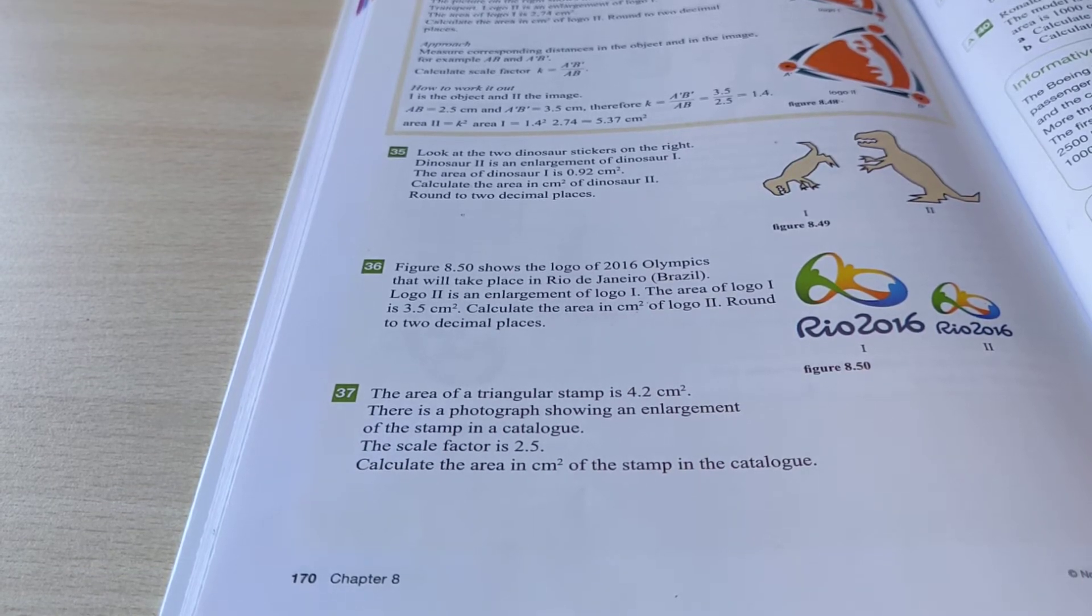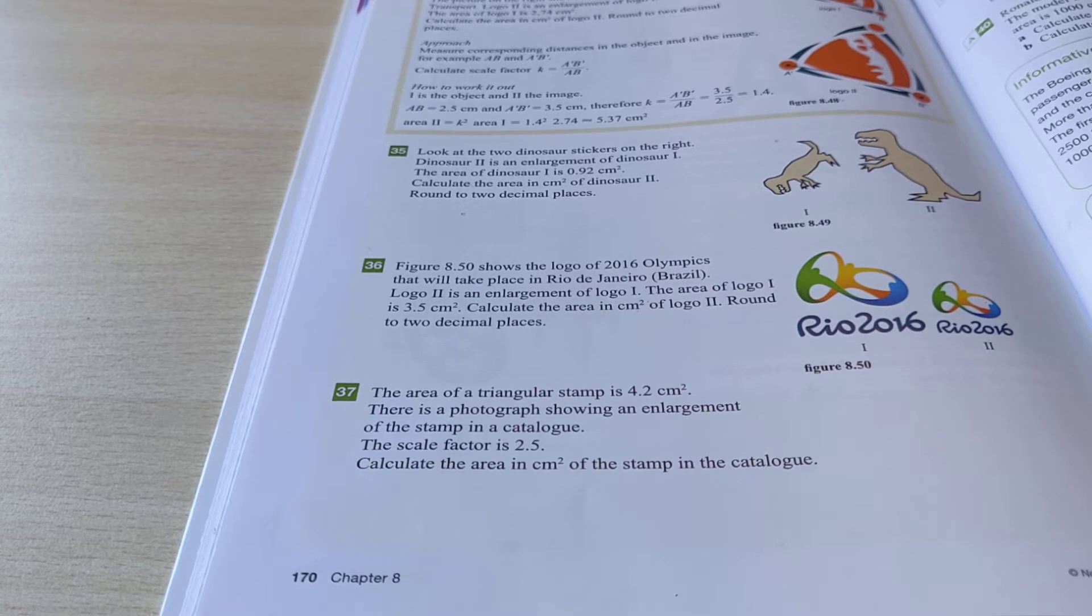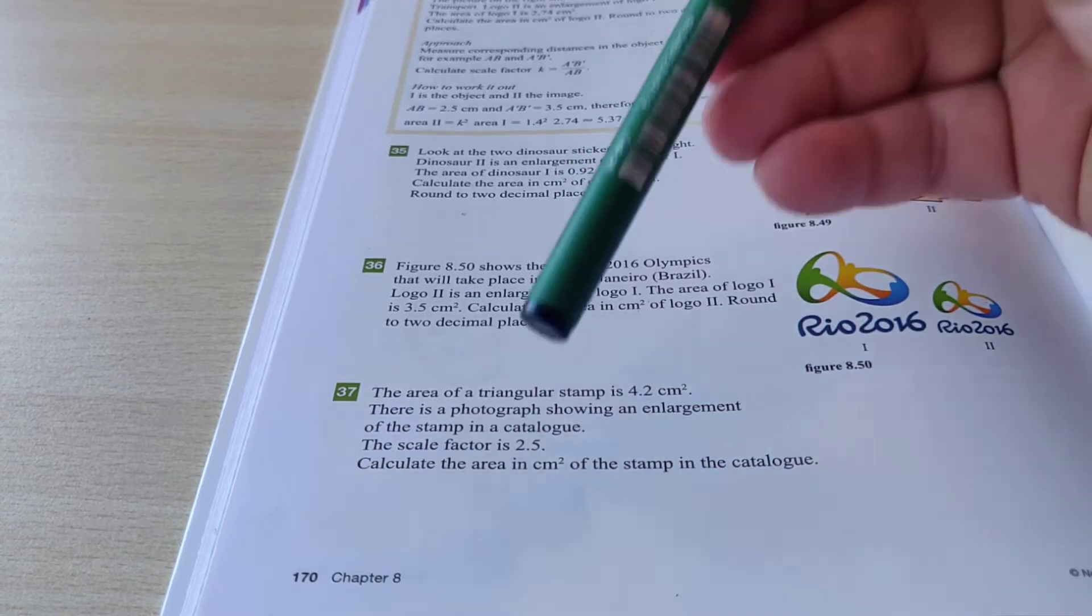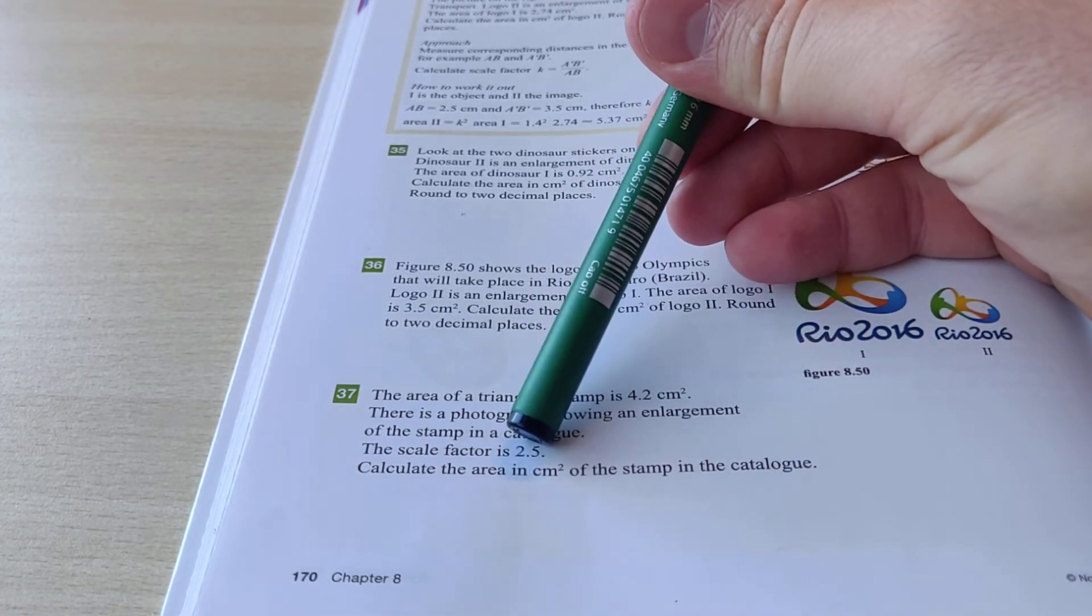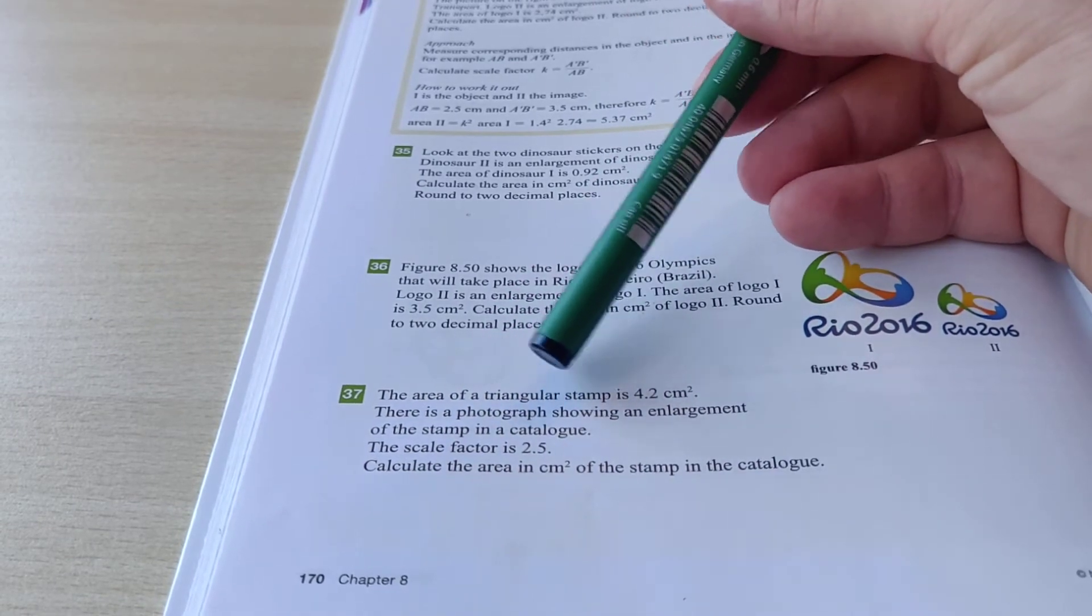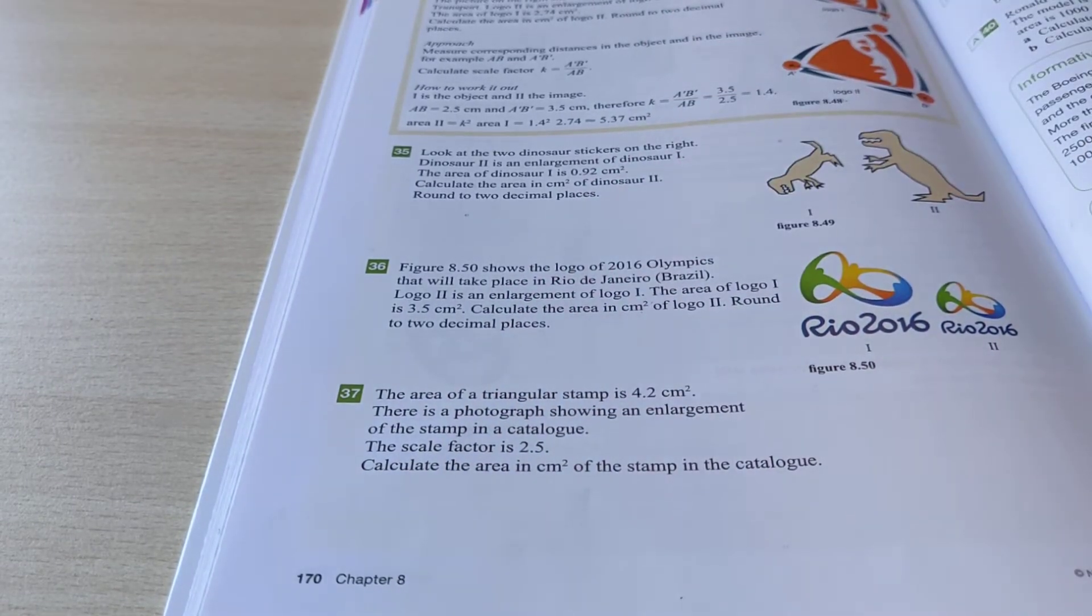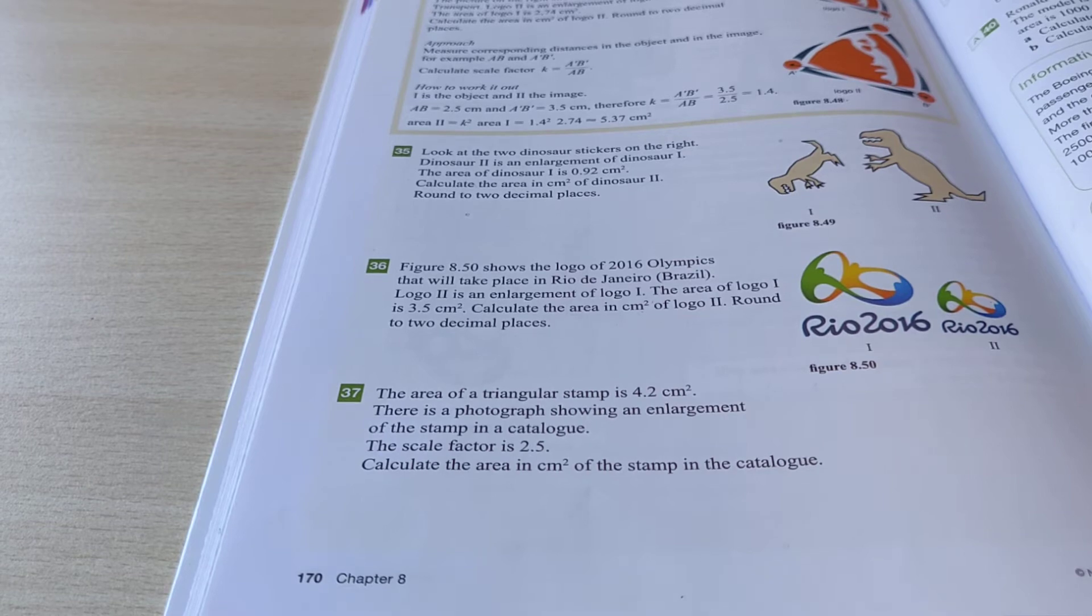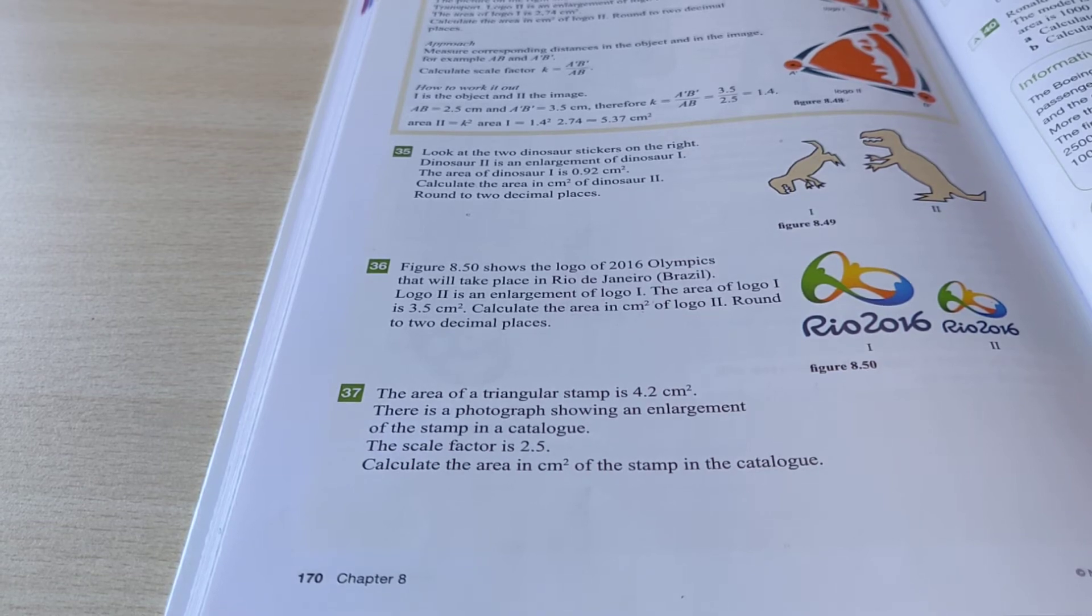So one thing that you should remember from the previous lesson is that if you have a scale factor, and the scale factor says something about the length, so if one of the lengths in this triangular stamp is, for example, 2 cm, then the length in the enlargement is 2.5 times as big.